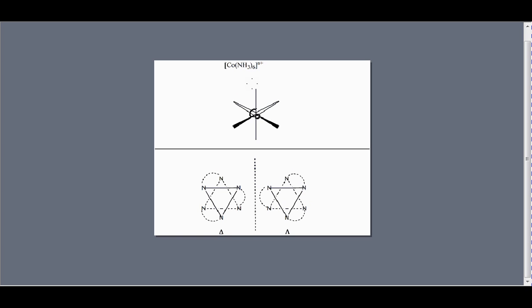Octahedral shape obviously has a cobalt in the middle and at each point on the octahedron we're going to have nitrogen atoms bearing 3 hydrogens. For reasons that I'll explain in a minute, I'll just color code these.